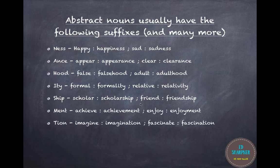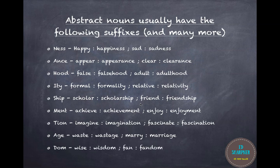-tion (pronounced 'shun'), like imagination or fascination; -age, like vestige or marriage; and -dom, like wisdom or fandom. Of course, there are other abstract nouns without these suffixes, like gloom or panic.